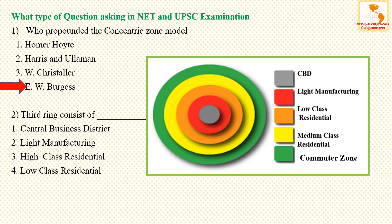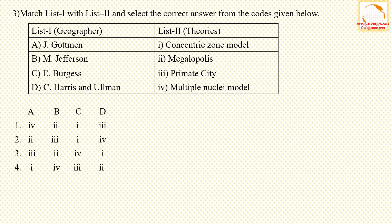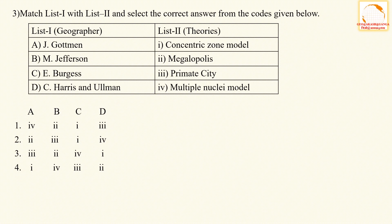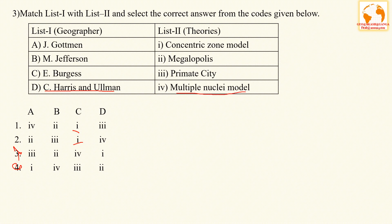Question 2 — The third ring consists of: CBD, light manufacturing, high-class residential, or low-class residential? The correct answer is low-class residential, as covered in the previous slide. Question 3 is a match-the-list question pairing geographers with their theories. E.W. Burgess with the concentric zone model gives the first pairing, and Harris and Ullman with the multiple nuclei model gives the second — making option two the correct answer.